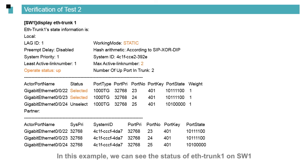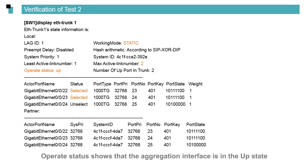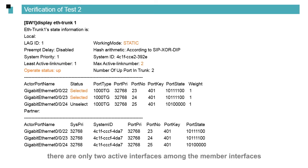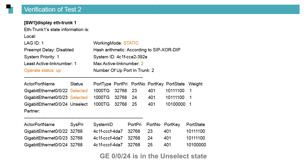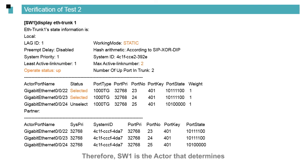In this example, we can see the status of ETH trunk 1 on SW1. The operate status shows that the aggregation interface is in the up state. Because we have configured max active link number 2, there are only two active interfaces among the member interfaces. The two active interfaces forward traffic and the inactive interface is used for backup. GE0/0/22 and GE0/0/23 are in the select state and therefore are active interfaces. GE0/0/24 is in the unselect state and therefore is an inactive interface used for backup. SW1 is the actor that determines which interfaces are active and which are inactive.